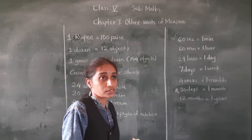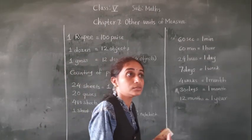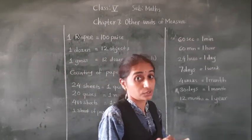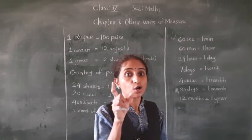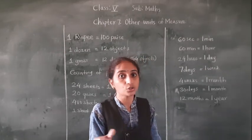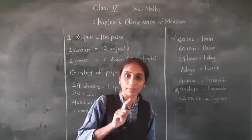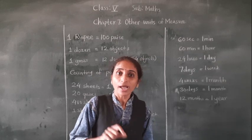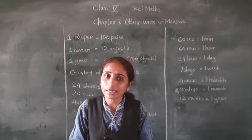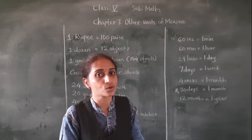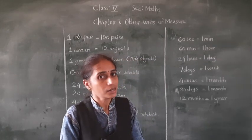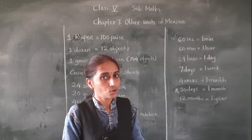How to find whether a year is a leap year or not? For that year, you have to divide by 4. And if you get remainder 0, that year is called a leap year.